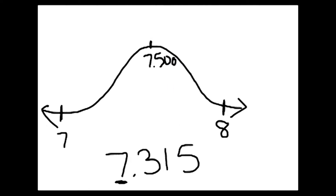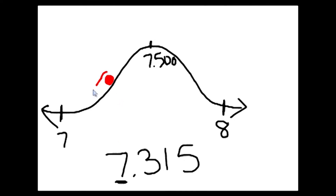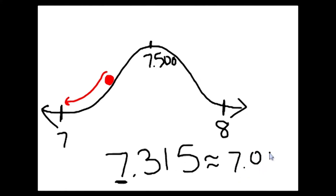Your next step is going to be to find where on this number line seven and 315 thousandths falls — it's about here. I like to think of it as a ball or a car rolling down a ramp, and that ball is definitely going to roll down this ramp to the seven. So that means seven and 315 thousandths rounds to, or is about equal to, seven. You might see it written as 7.000.